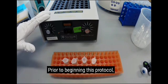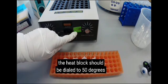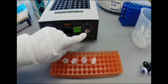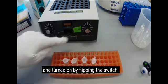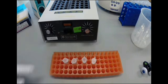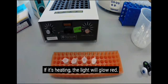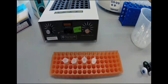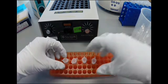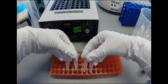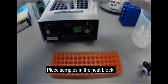Prior to beginning this protocol, the heat block should be dialed to 50 degrees and turned on by flipping the switch. If it's heating, the light will glow red. Place samples in the heat block.